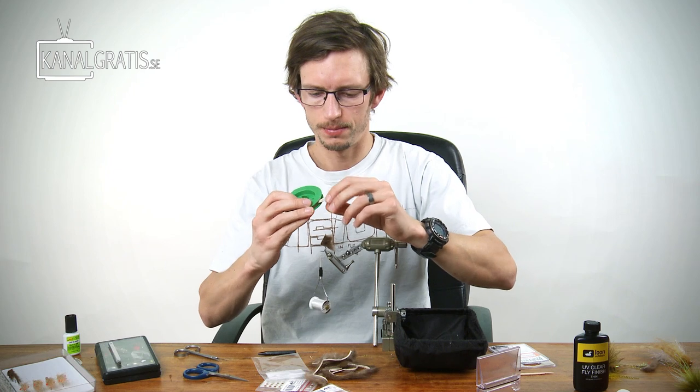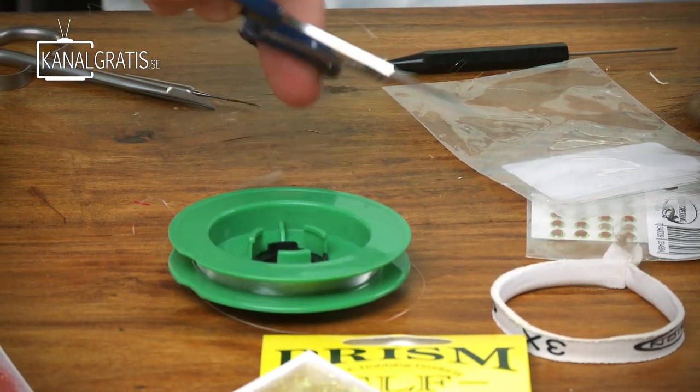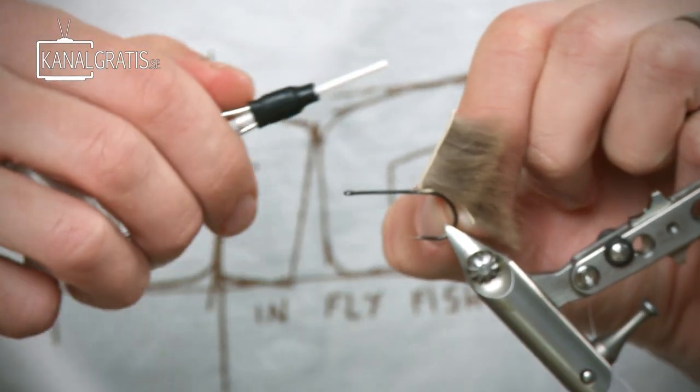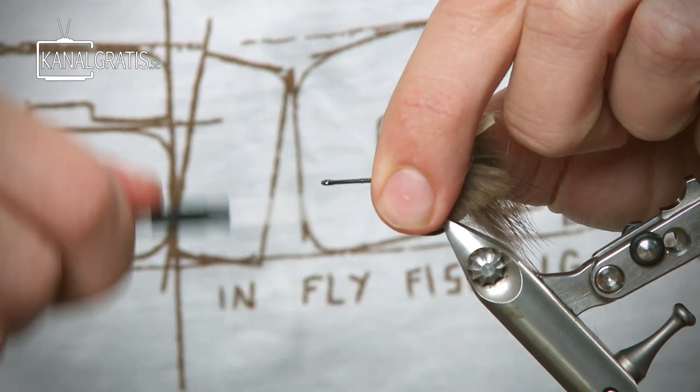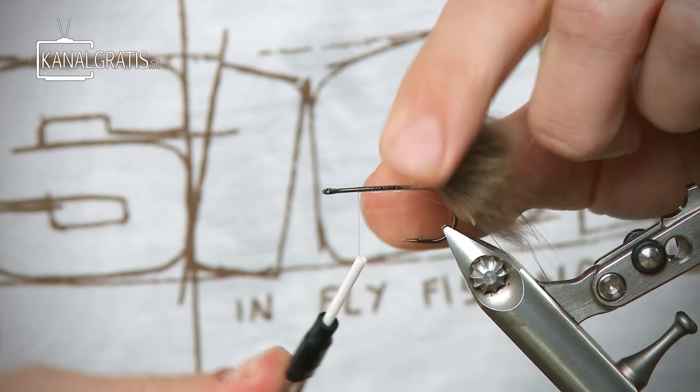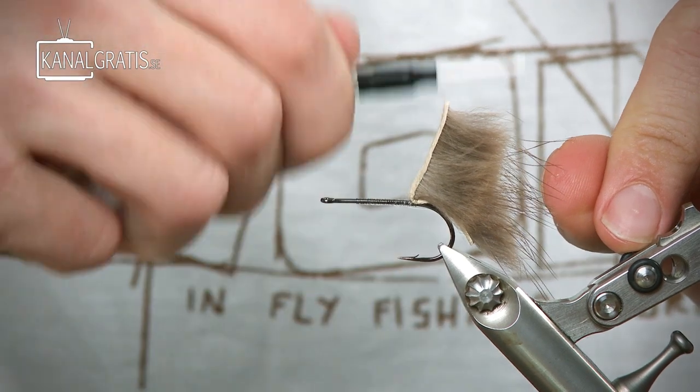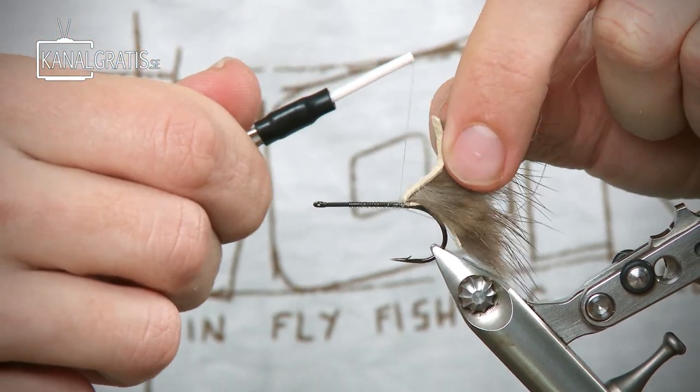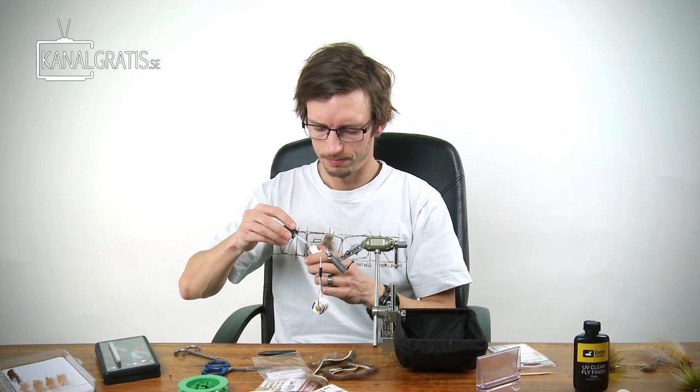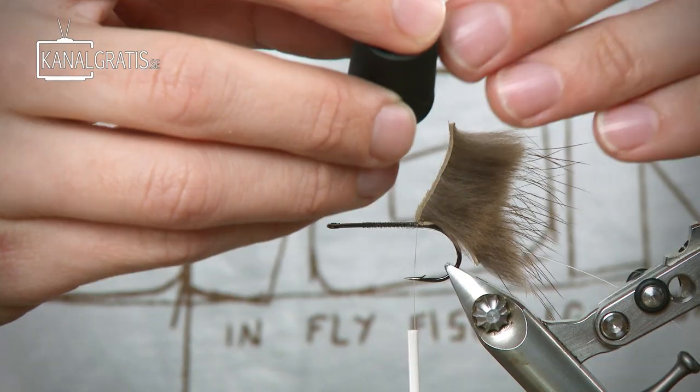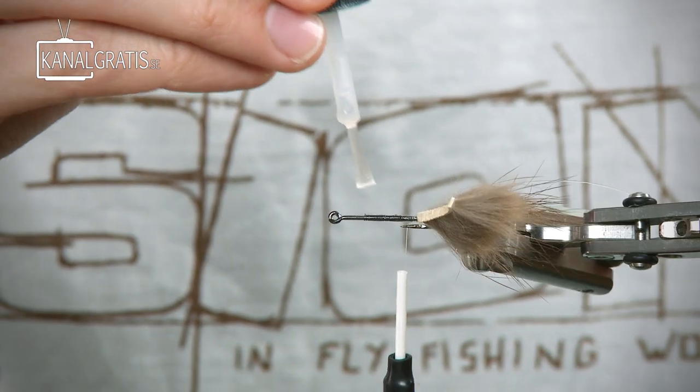Rib. We need something to rib. And we tie that in as well. And then go back again all the way back. You want to go all the way in. We add a little bit of super glue. Makes the fly a lot stronger. Not too much, just like that.